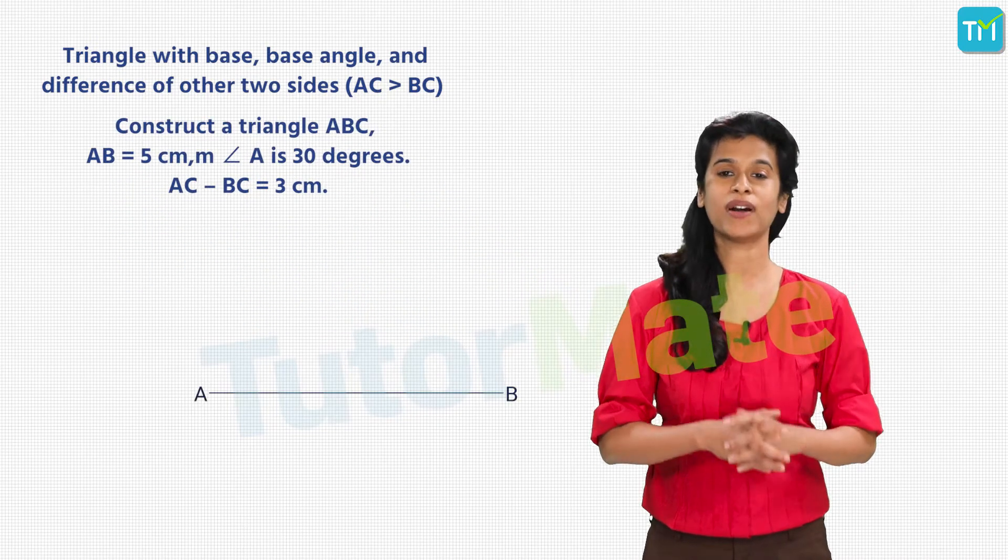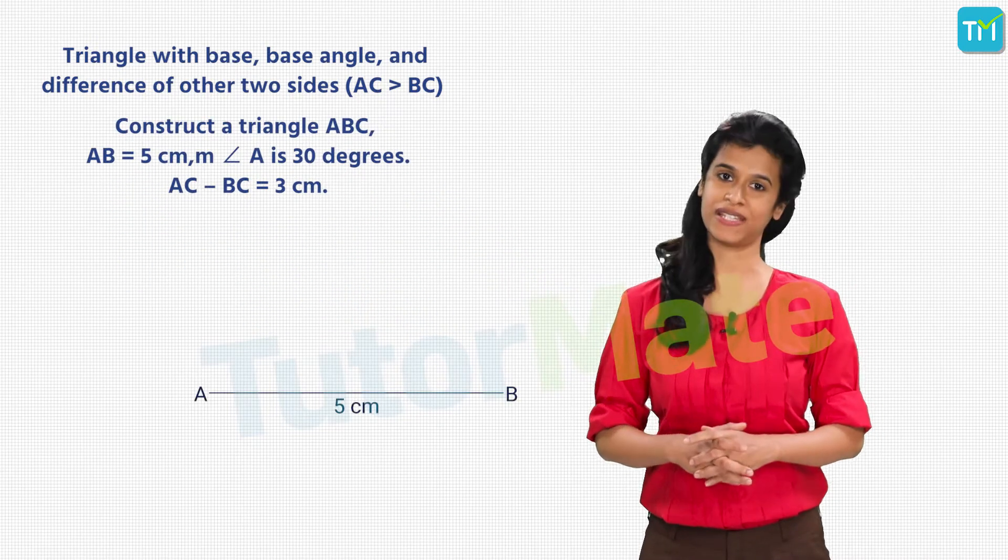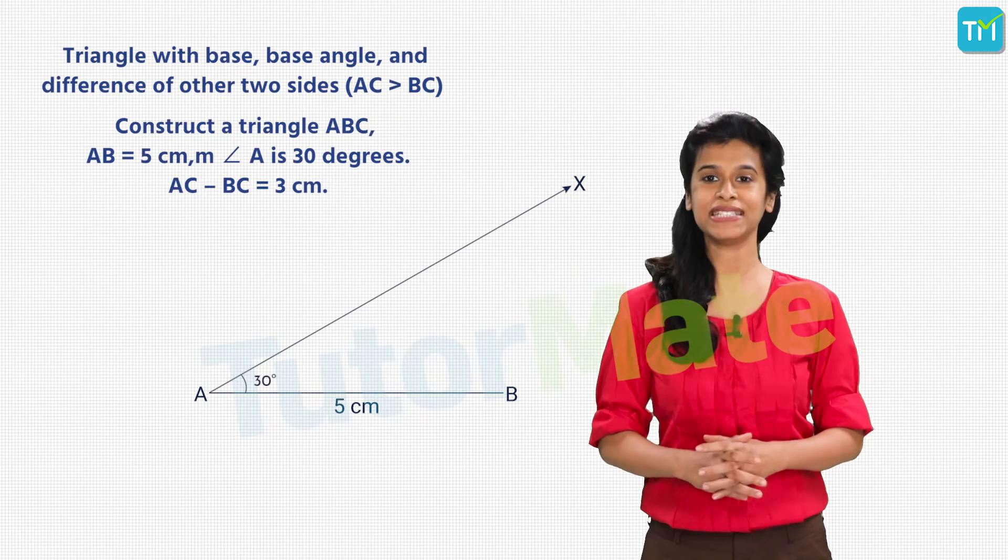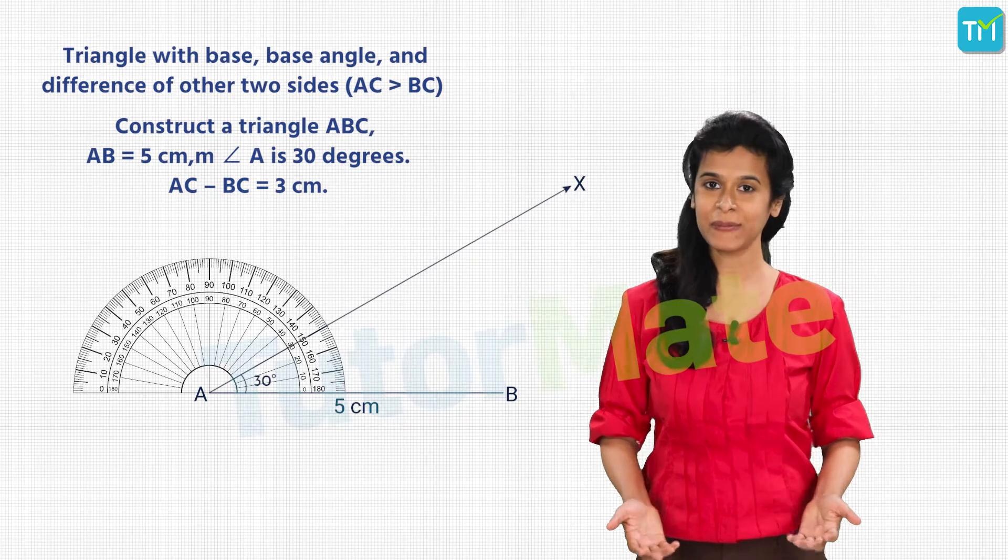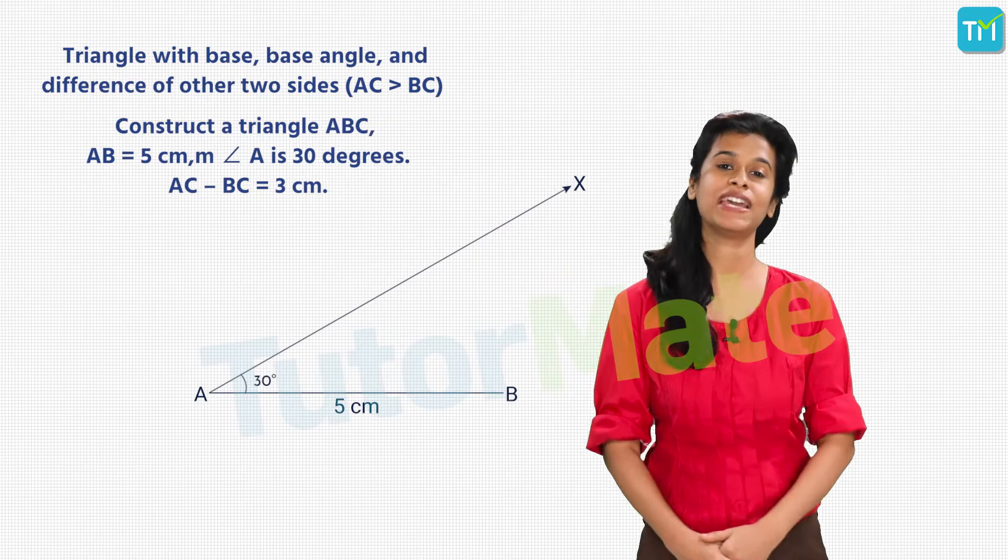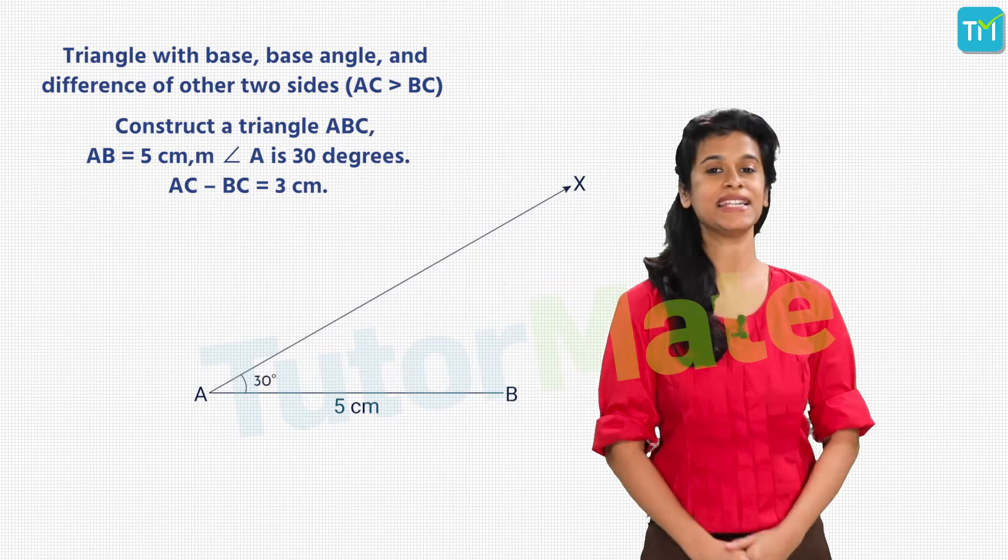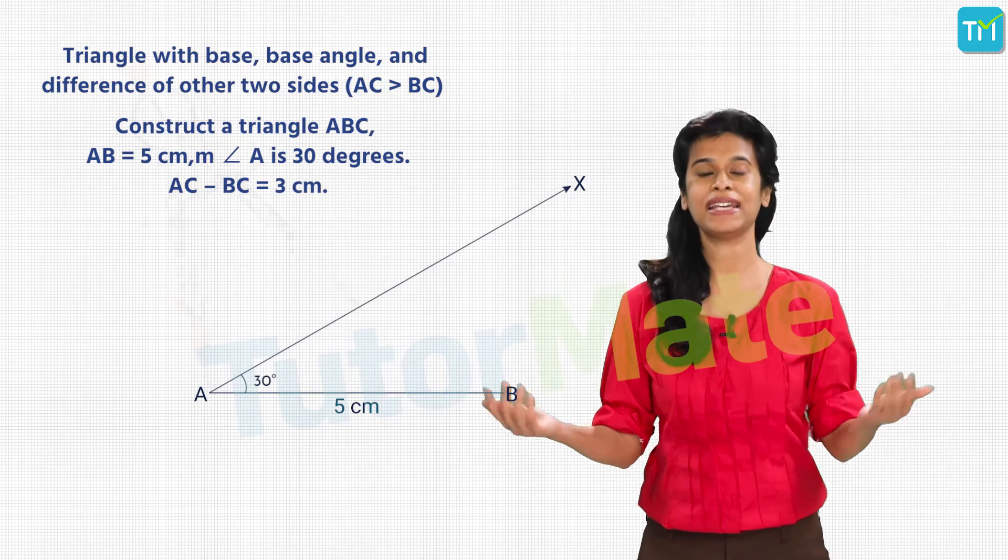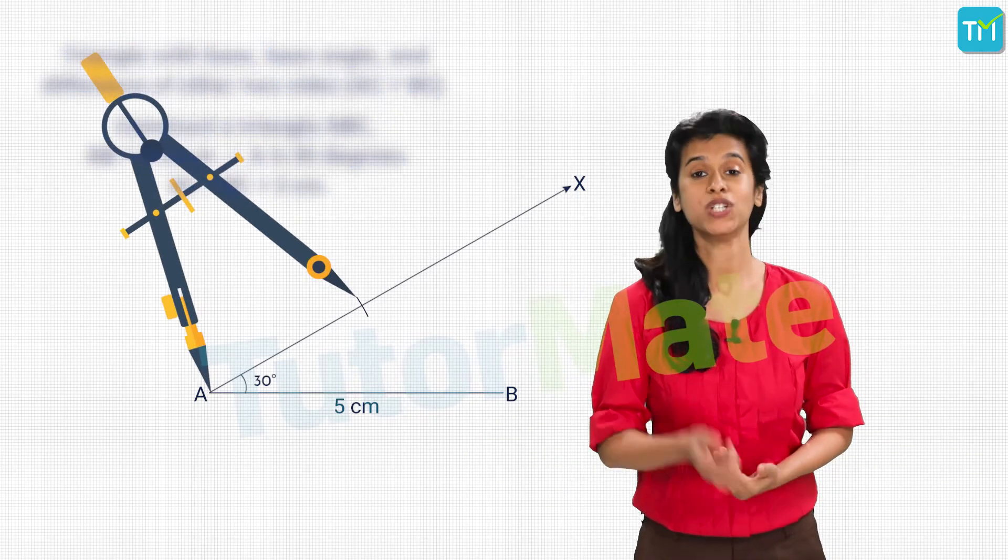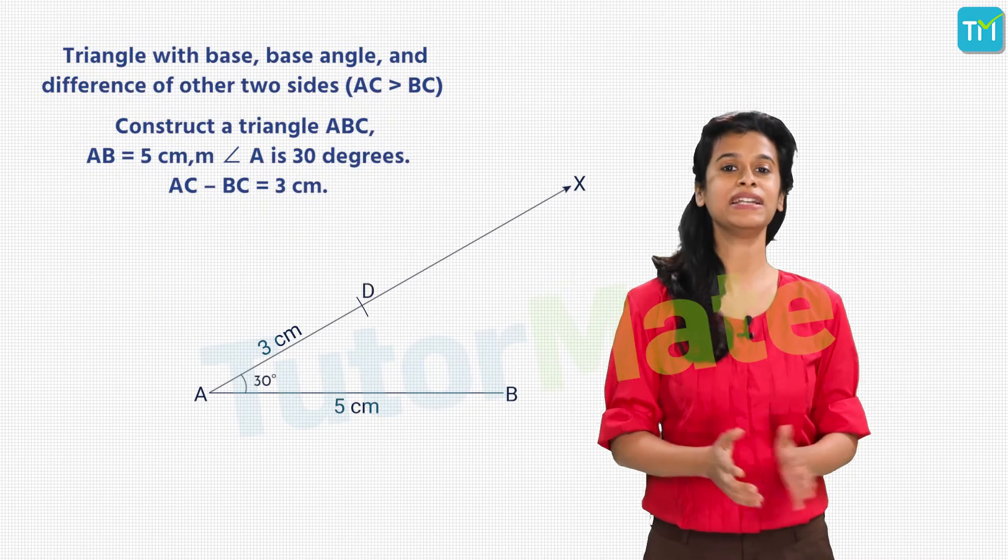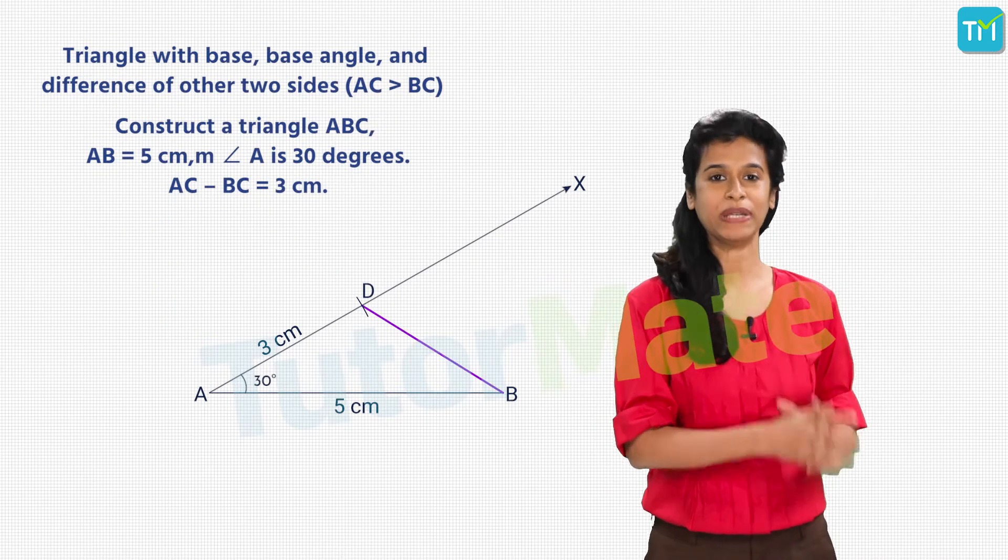We start by drawing AB equals to 5 centimeters. Then, measure and draw an angle BAX of 30 degrees using your protractor. Now, our task is to find the point C on ray AX so that AC minus BC is 3 centimeters. Since we know that AC is greater than BC, draw an arc of length 3 centimeters on ray AX. Label it as D and join BD.